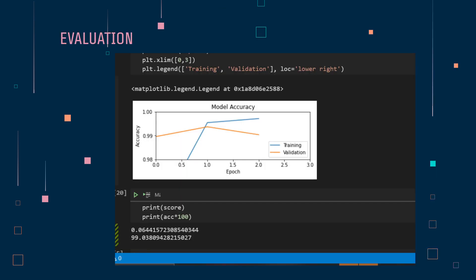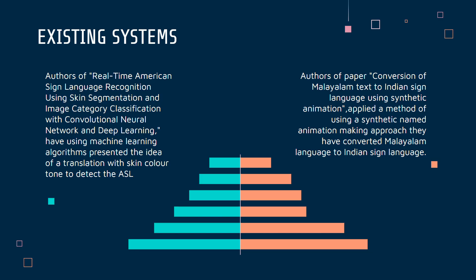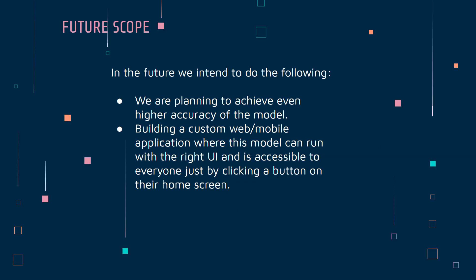You can see that this is the training versus the validation graph. You can also see that this model can run with a clean UI and is accessible to everyone, just by clicking a button on their home screen.